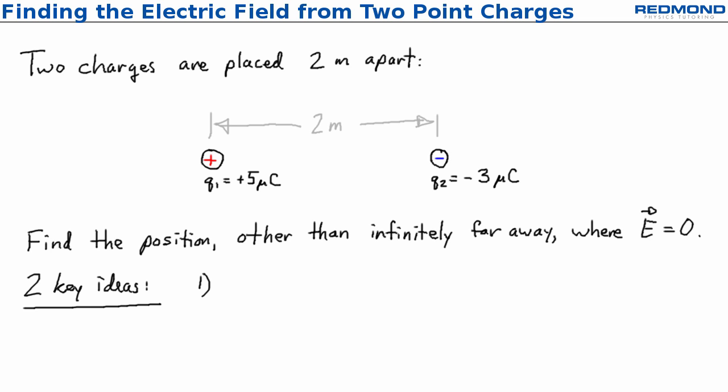First, superposition. The net electric field at any point is the sum of the electric fields from each individual point charge. The other key idea is that there are three regions to consider.